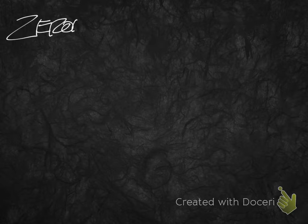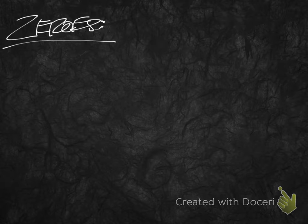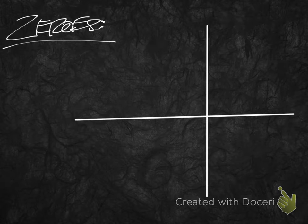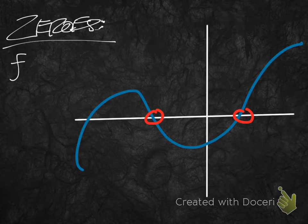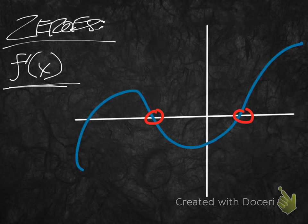Let's look at zeros first. You do not need any basis in calculus to understand the zeros of a function. The zeros of a function are just any time that function touches the x-axis. So we have a zero here and a zero here — there are two zeros of that function. Zeros are also critical points; they're critical points of f of x, and that will make more sense in a minute.